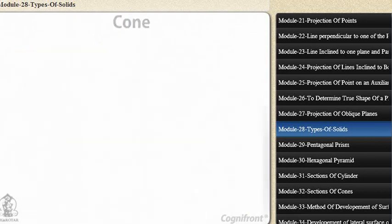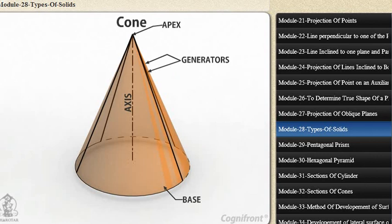Cone. A right circular cone is a solid generated by the revolution of a right-angled triangle about one of its perpendicular sides which is fixed. It has one circular base.